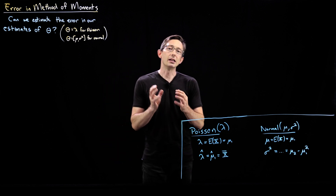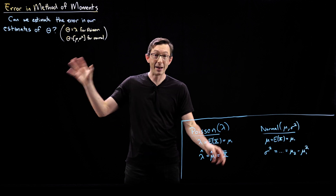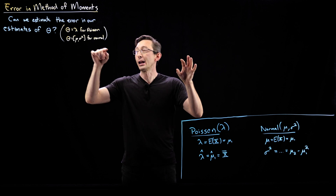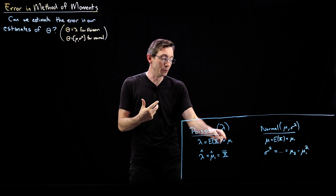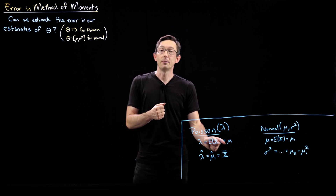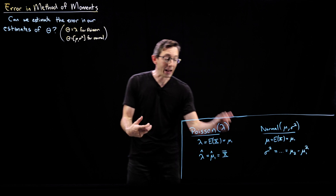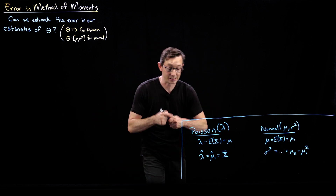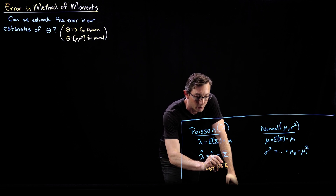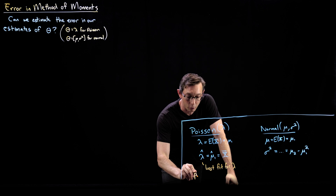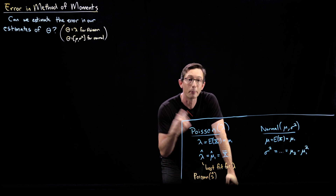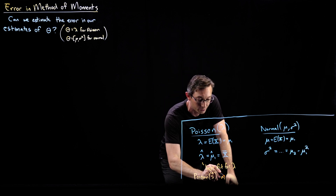Then what we do is approximate those moments from our actual measurement data. We don't know the parameters of the distribution, so we can't compute mu1 from the PDF, but we can approximate it from data. We approximate mu1 hat as the sample mean of collected data and substitute that in as our best guess for the parameter — our best fit for lambda, so that Poisson of lambda hat is a pretty good approximation to the data.